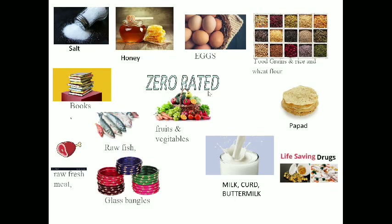The idea behind the zero rate is food for everyone — no one should be hungry, and it should be easily attainable to all. Zero-rated goods include fresh vegetables, salt, books, honey, eggs, food grains including rice and wheat flour, papad, life-saving drugs, milk, curd, buttermilk, and glass bangles.